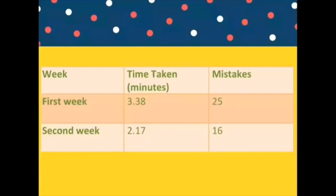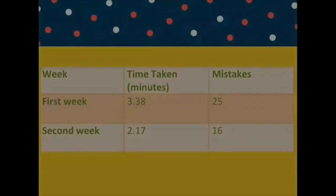This table shows the average results from both hamsters. During the first week, the time taken was 3 minutes 38 seconds and the average number of mistakes was 3 to 5. For the second week, the time taken was 2 minutes 17 seconds and the number of mistakes was 1 to 6 mistakes. By looking at the results, we can conclude that the results do support the hypothesis. We can clearly see that the hamsters completed the maze faster in the second week when they were given food with glucose.